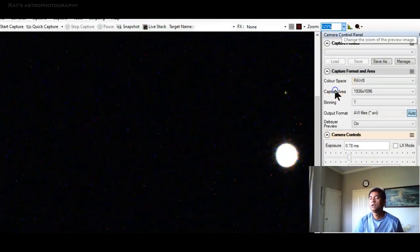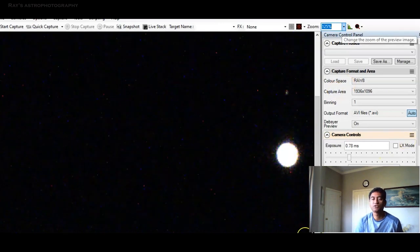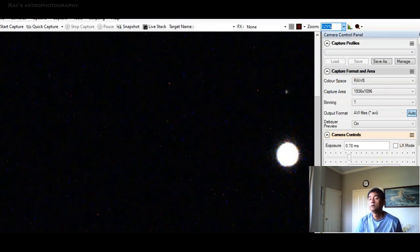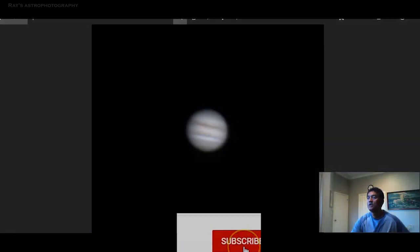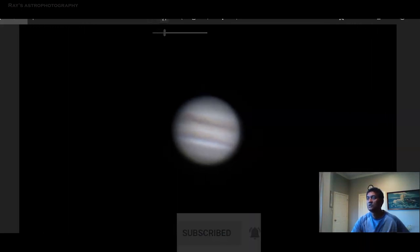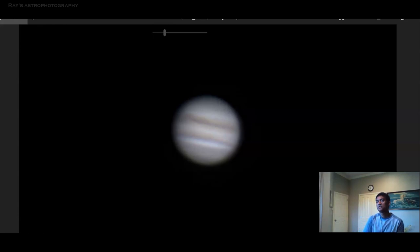This is the live view from Celestron Astro Master 130. Here is the processed image. This is the Jupiter image captured using Celestron Astro Master 130. Not too bad for a hundred dollar telescope.